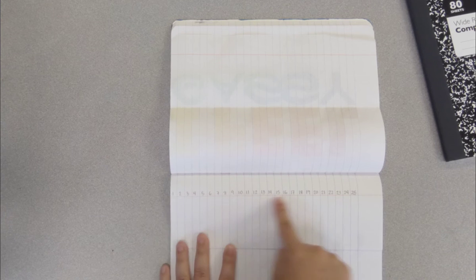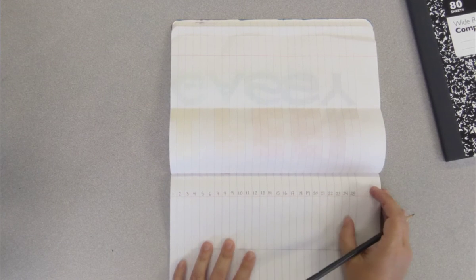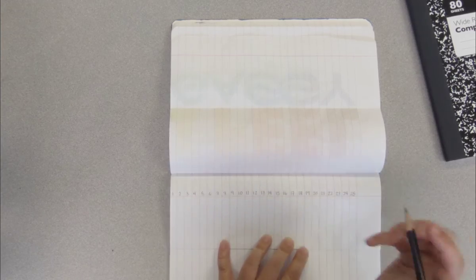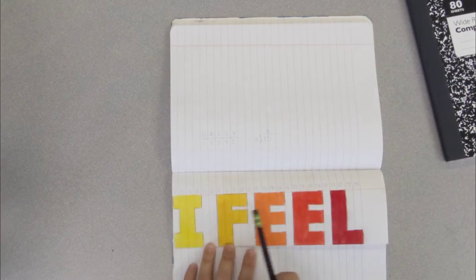I'm gonna leave it tucked under like this so that I'm really just looking at half of a page numbered 1 through 25. And I'm going to do the letters I, F, E, E, L.